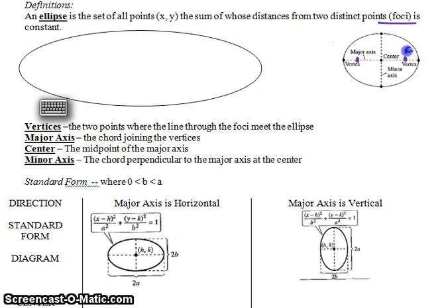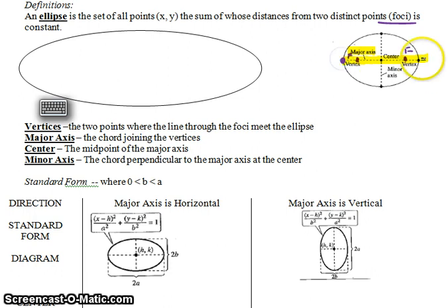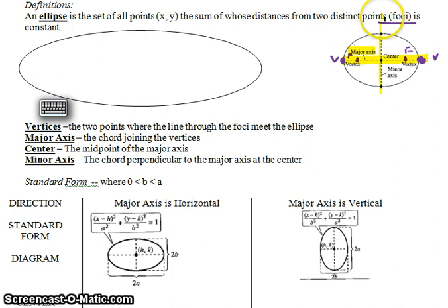The foci are labeled with an F and they lie on what's called the major axis. This long one here is the major axis, and on it also lie the two vertices, which we label with a V. So the vertices and the foci always lie on the major axis. You also have another axis called the minor axis, which is the vertical one here — it crosses the major axis perpendicularly and goes through what's called the center of the ellipse.